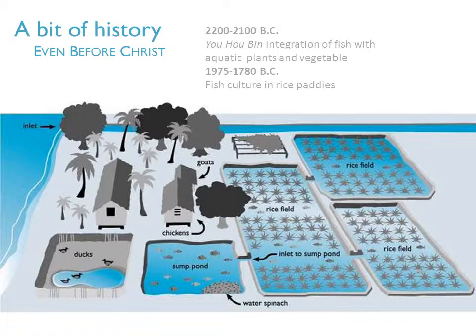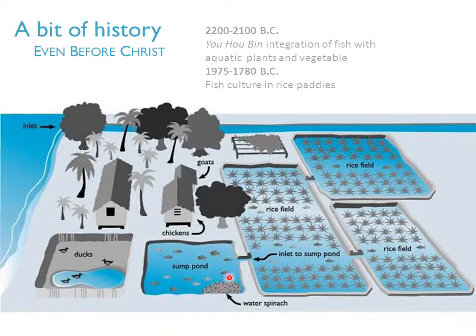It probably looked much like this picture, where you can see goats, and there is also the production of chickens and ducks. There are also ponds here where you can see fish and water spinach, and in this area you have rice fields.